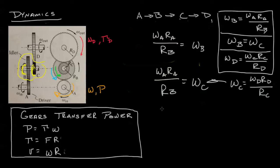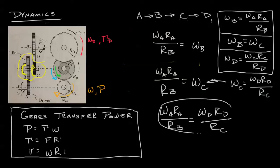We plug it right back in. We get omega A Ra. We keep the left-hand side the same. RB equals omega D RD over RC. And this way, we now have a relationship between omega A and omega D.